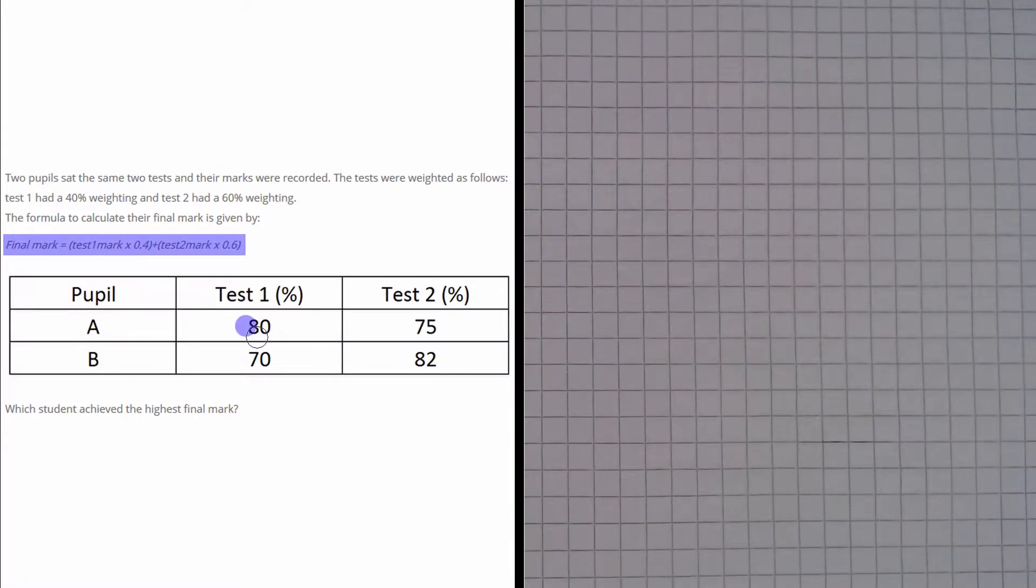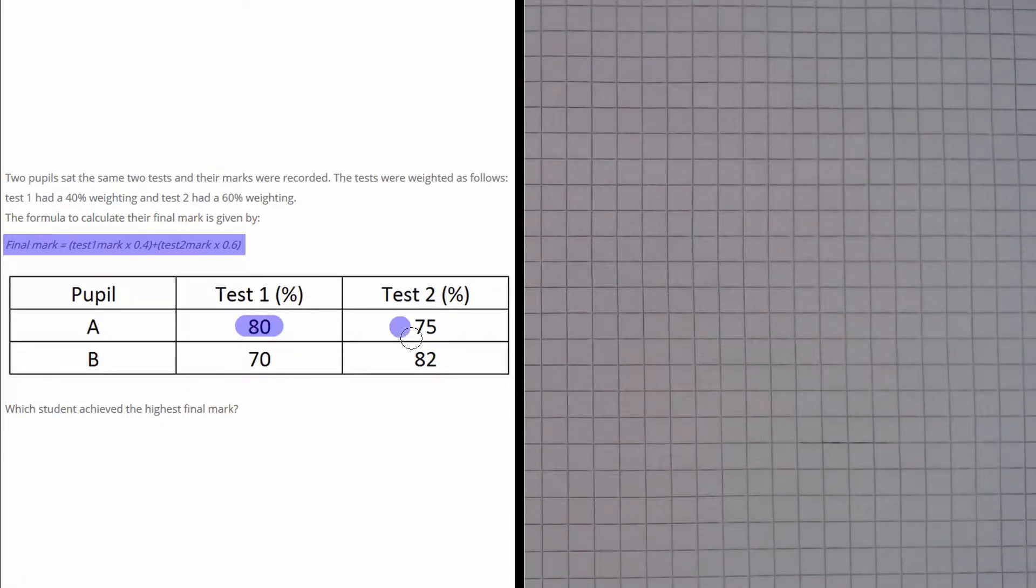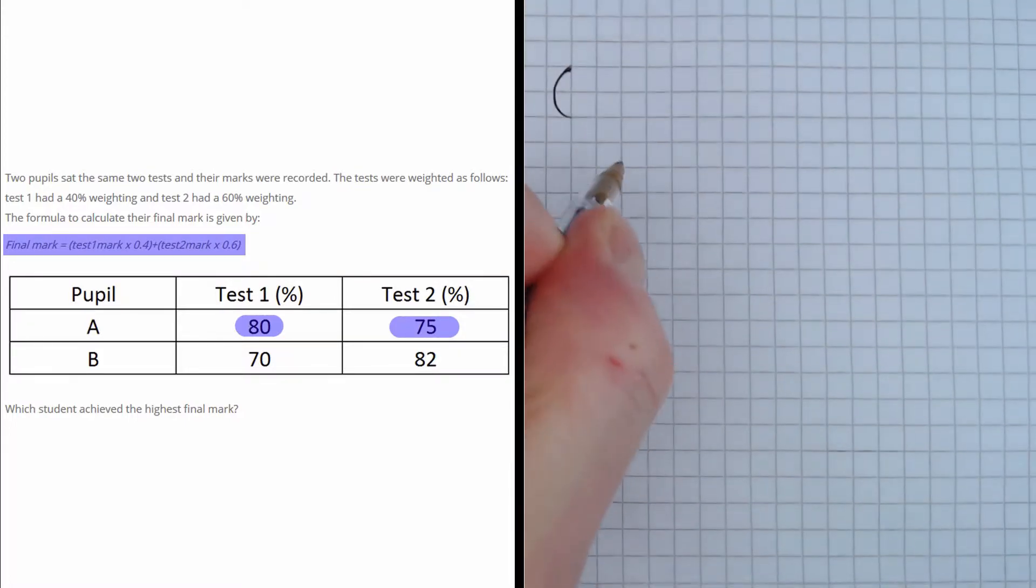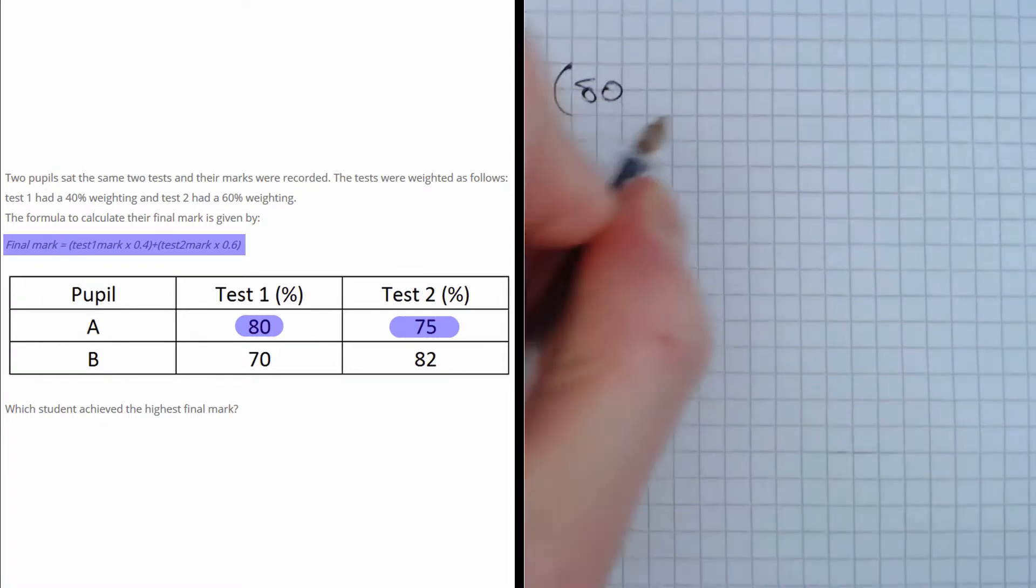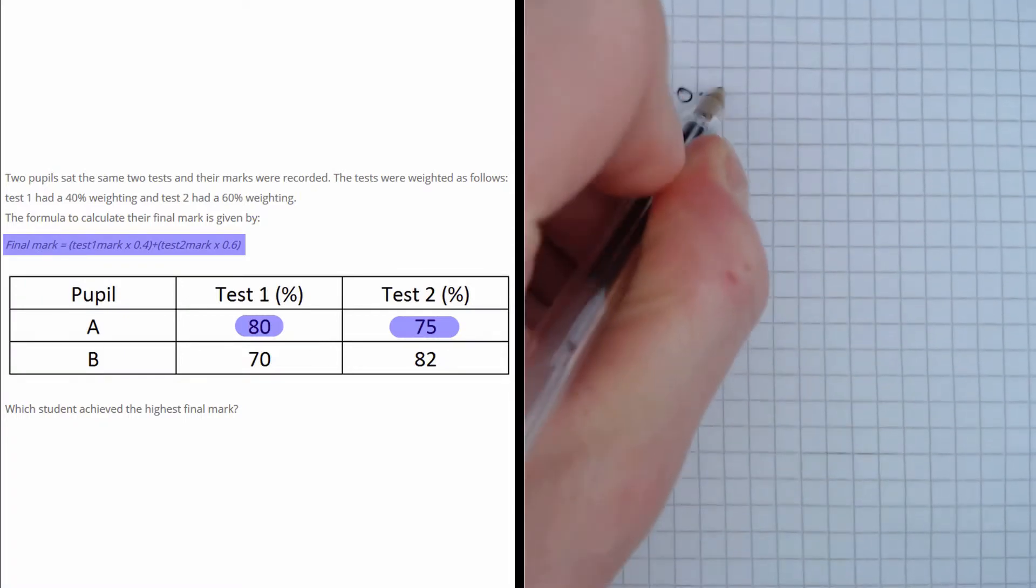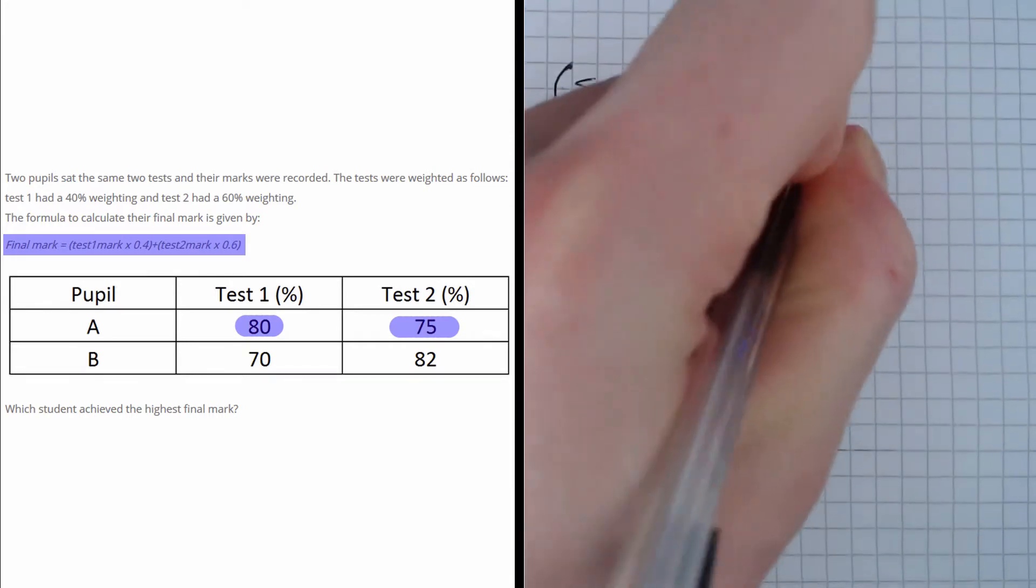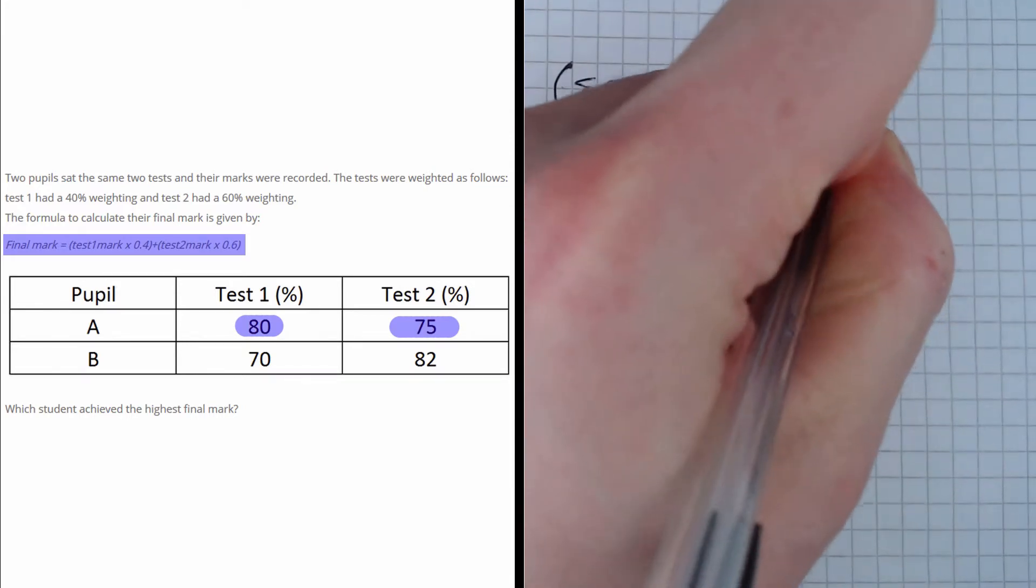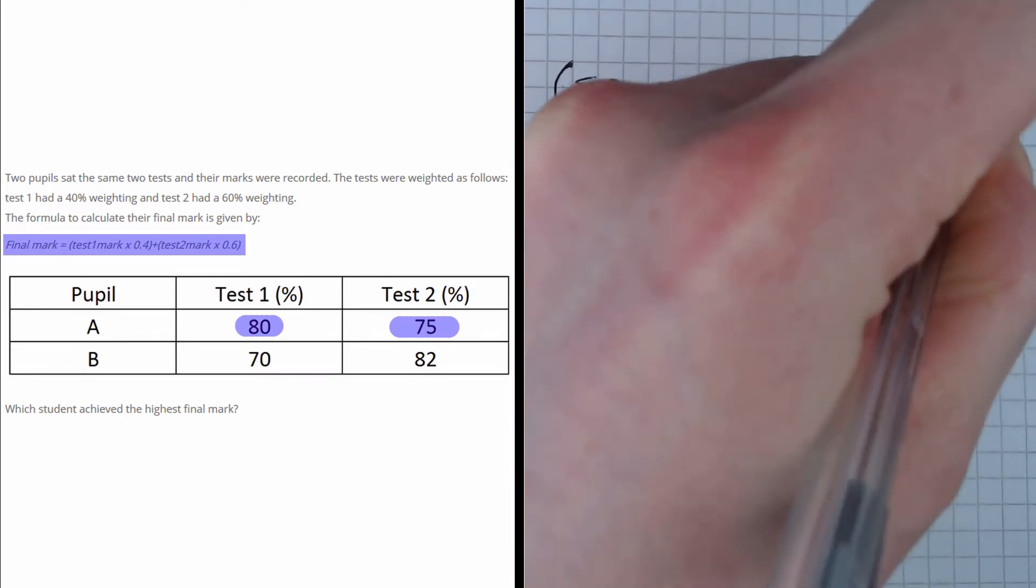Let's start with pupil A. We can see they had a test 1 percentage mark of 80 and a test 2 percentage mark of 75. Applying the formula, we have the test 1 mark, 80, multiplied by 0.4, and we add on to that the test 2 mark, 75, multiplied by 0.6.